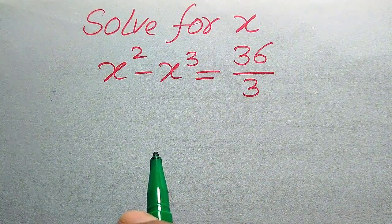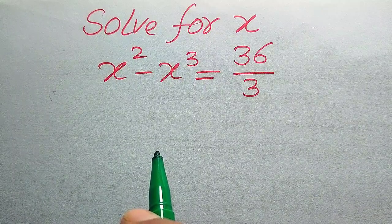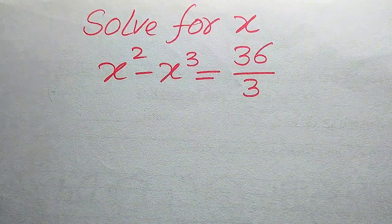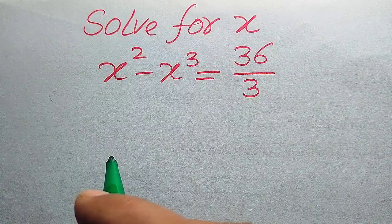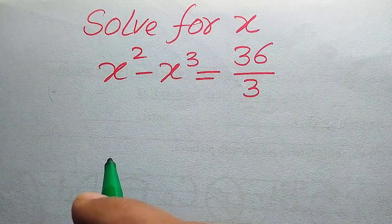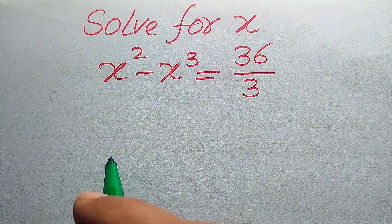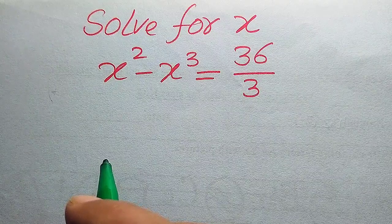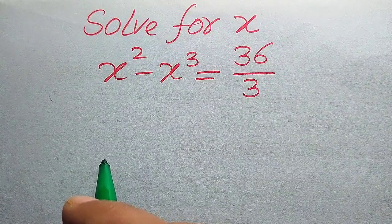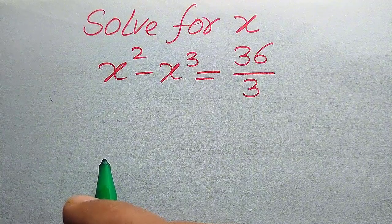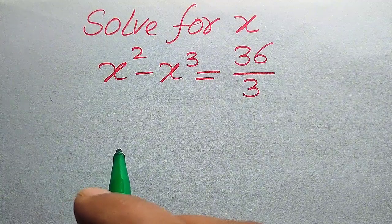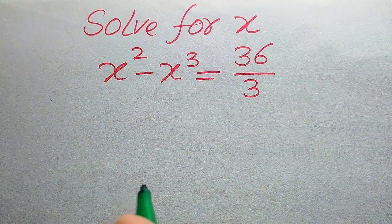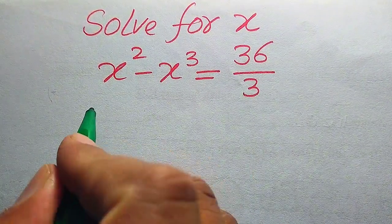Before we jump in, I want to hear from you: what method would you use first — factorization and substitution method, or graphing method? How many real solutions do you think this equation has? And do you think the value of X will be positive, negative, or both? Drop your answers in the comments and let's see who gets it right before the solution appears.